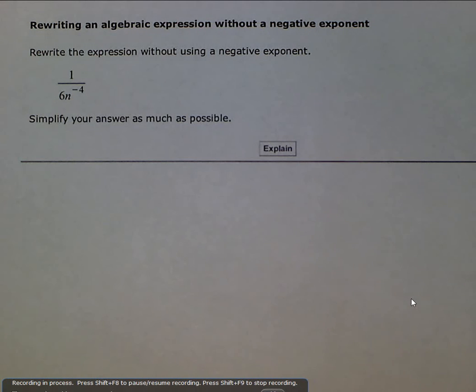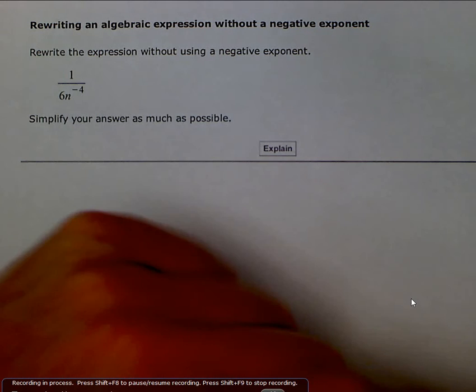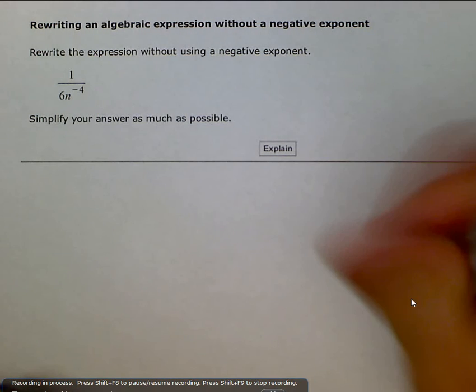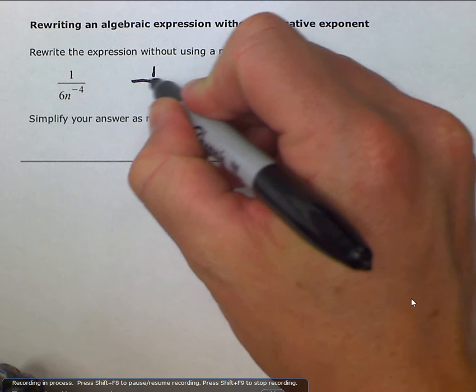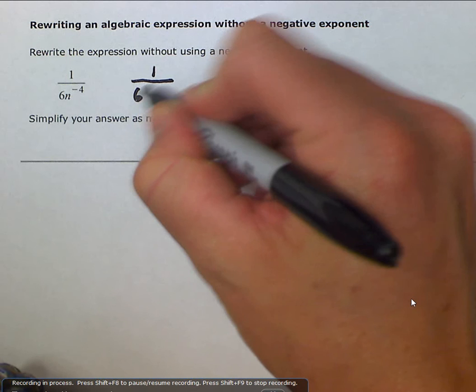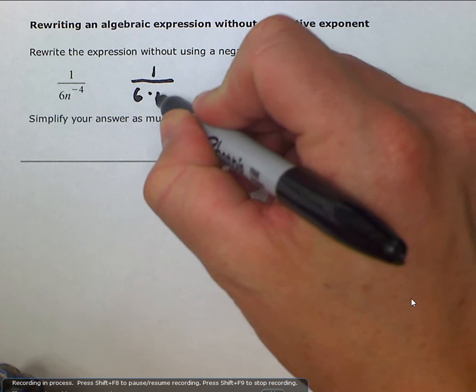Here we are asked to rewrite the expression without using a negative exponent. We can go ahead and rewrite this as 1 divided by 6 times n raised to the negative 4th.